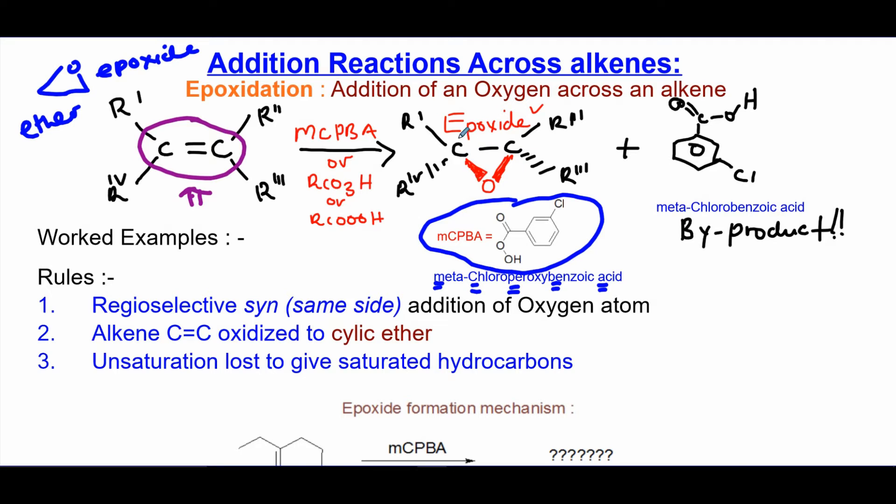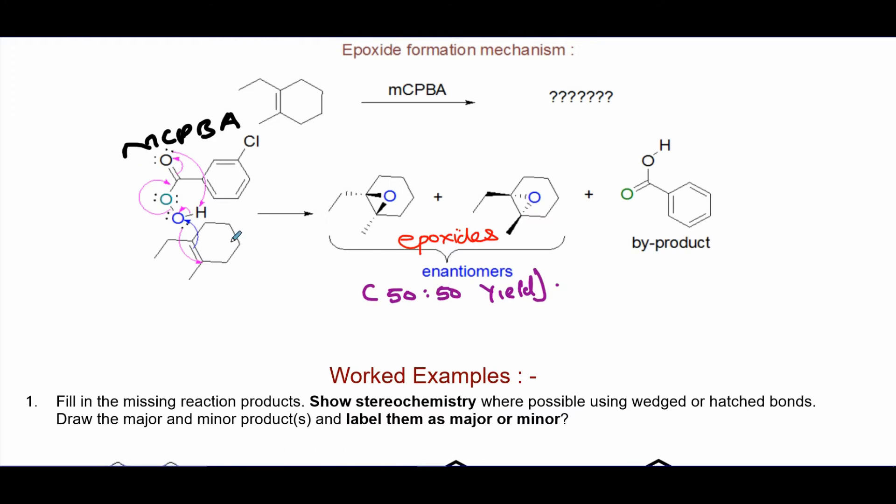So again you get an epoxide plus its enantiomer, and the byproduct is the meta-chlorobenzoic acid. For the mechanism, mCPBA, which is this structure, reacts with the alkene.